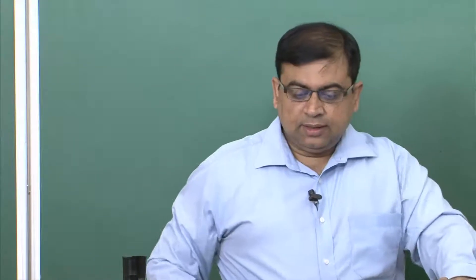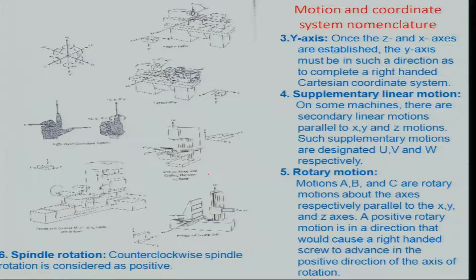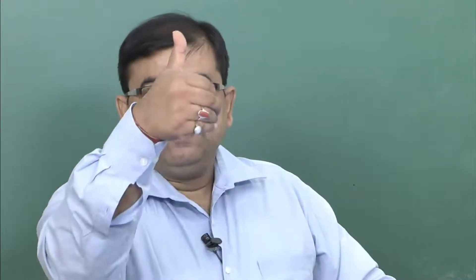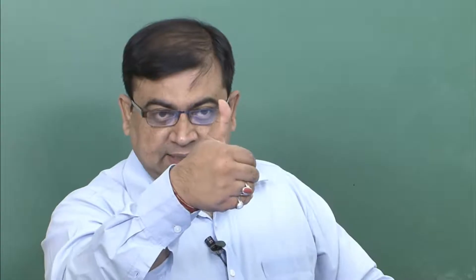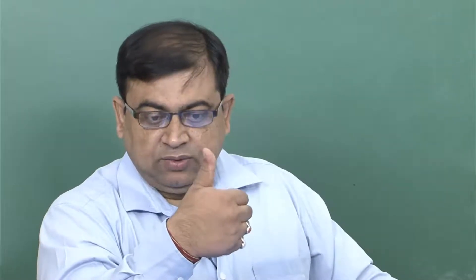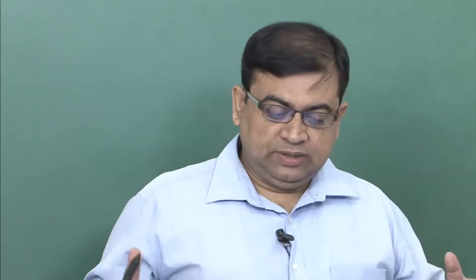Once you understand the linear axis directions, the question of rotary motions comes. Rotary motions can be determined with the right-hand grip rule. If your finger points in the positive direction of a certain axis — for example, the positive Z axis in the case of the milling tool — the curling fingers of your right hand give you the positive direction of rotation. Looking from above, this is the counterclockwise direction. You now have three axis directions and three rotation directions defining all relative motion of the tool with respect to the workpiece.